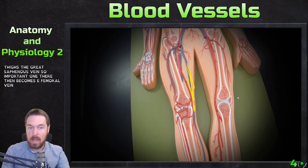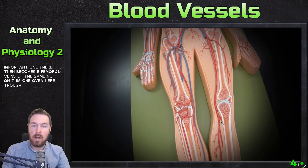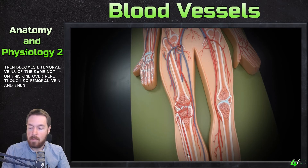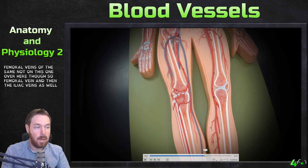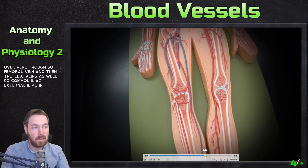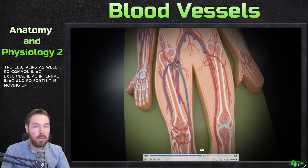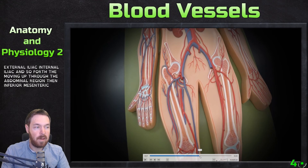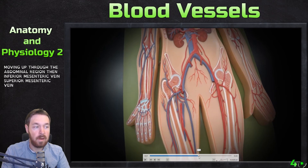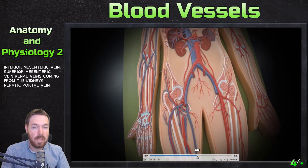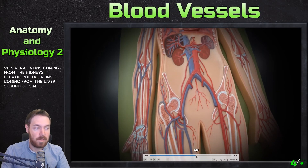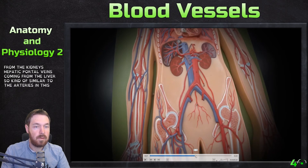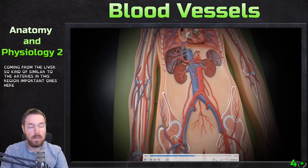The great saphenous vein becomes the femoral vein. Then we have the iliac veins — common iliac, external iliac, internal iliac, and so forth. Moving up through the abdominal region: inferior mesenteric vein, superior mesenteric vein, renal veins from the kidneys, and hepatic portal veins from the liver — similar to the arteries in this region.